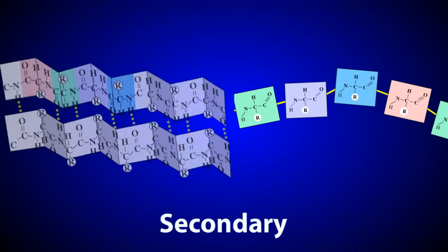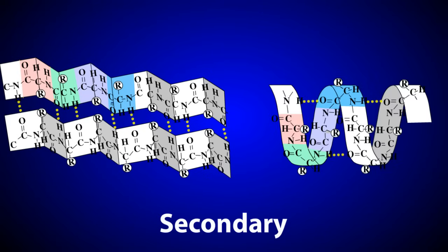The secondary structure refers to the pleated sheet or helix that a protein chain can form due to hydrogen bonding and other chemical attractions between the R groups of nearby amino acids.